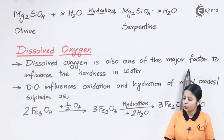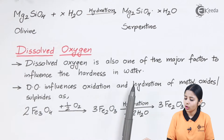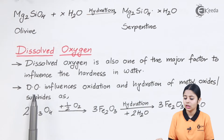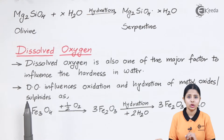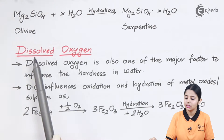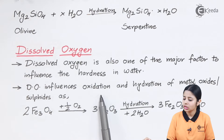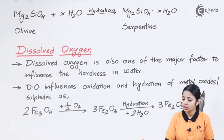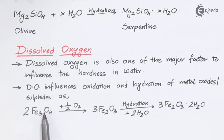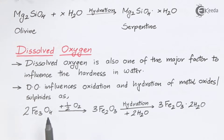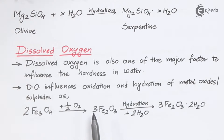Dissolved oxygen, also abbreviated as DO, is a major factor influencing hardness of water. DO influences oxidation and hydration of metal oxides and sulfides. For example: 2Fe3O4 in the presence of ½O2 (nascent oxygen, which is unstable, is written as ½O2) forms 3Fe2O3. This is an oxidation reaction.